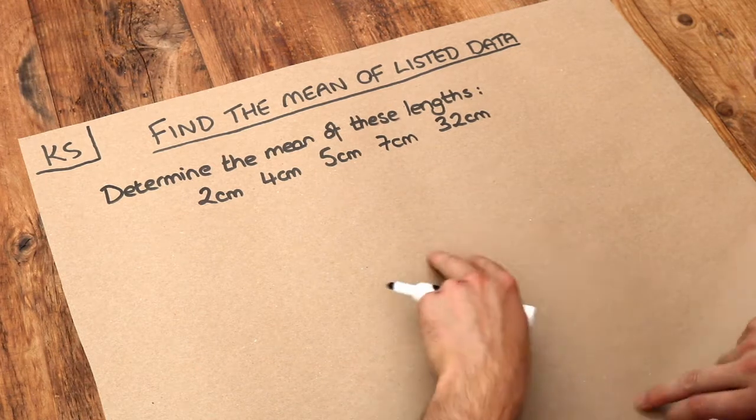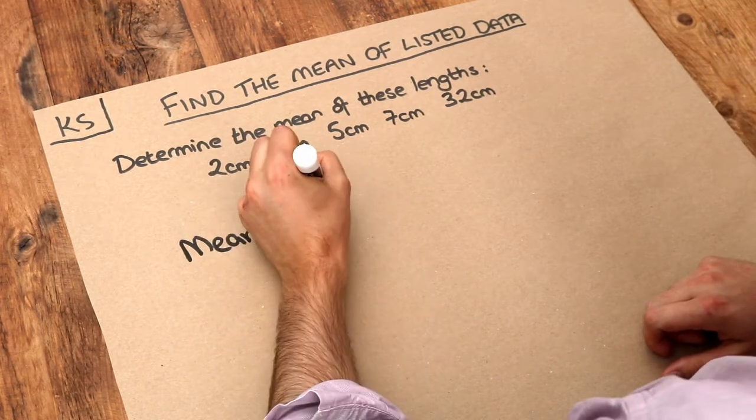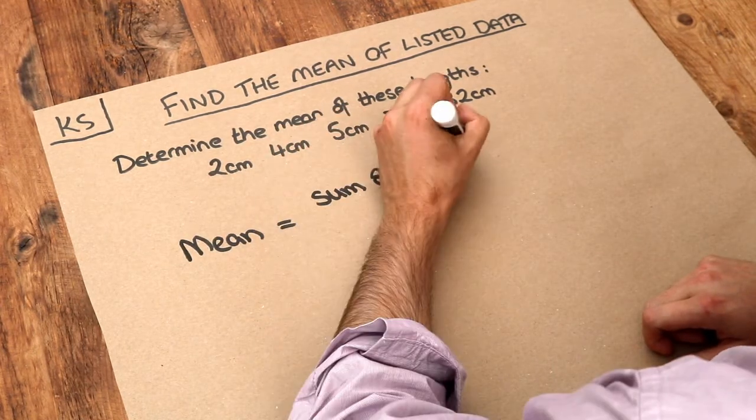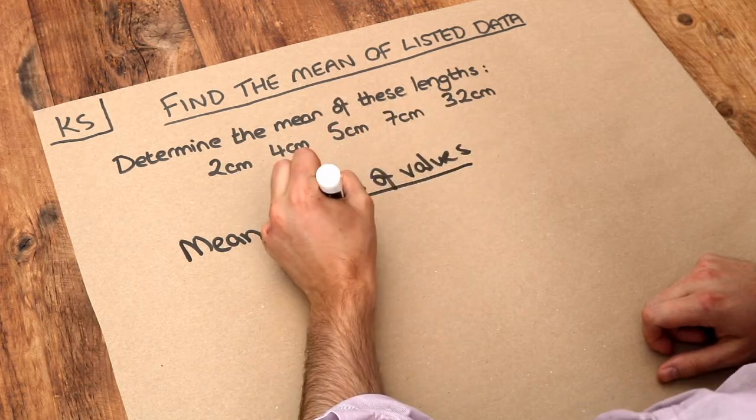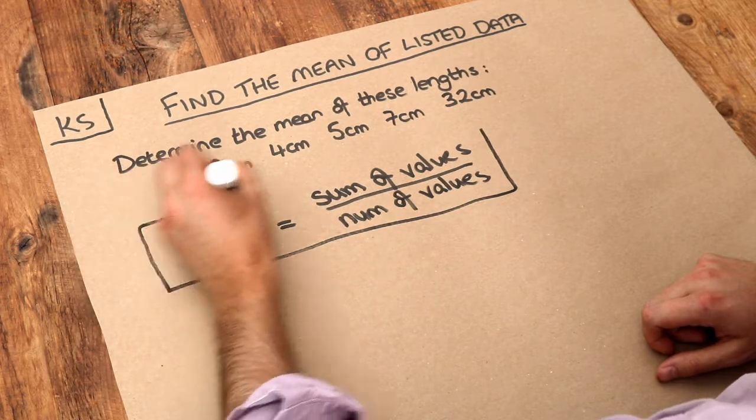Now the mean is probably the hardest to calculate and the way we work it out is this: we add up the values and we divide it by the number of values that there are. And that's the only formula you need to know for this video.